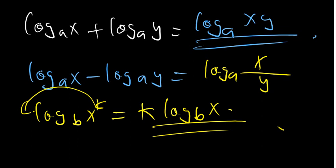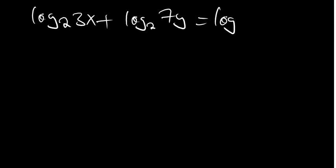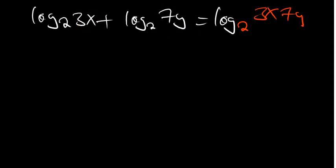Now let's practice condensing. Say we have log base 2 of 3x plus log base 2 of 7y. We can only condense if the bases are the same — if they differ, we must change the bases first. Here the bases are both 2 and the sign is positive, so we multiply: log base 2 of (3x · 7y).